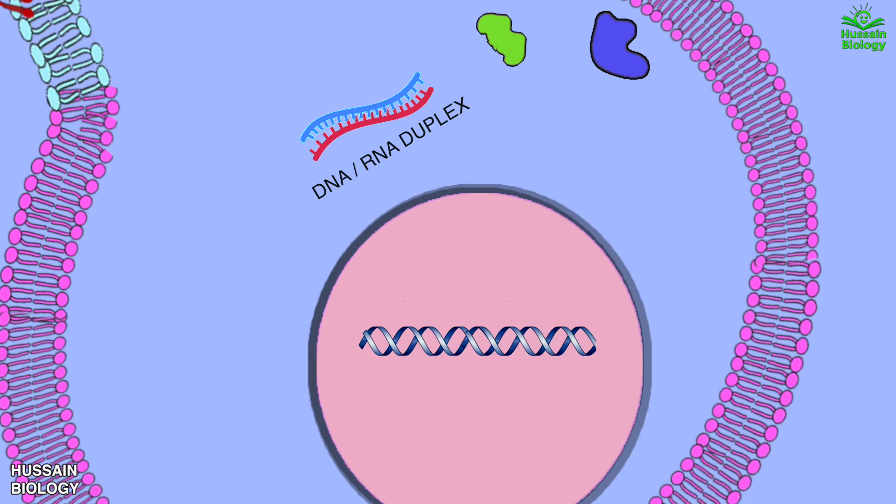Furthermore, this reverse transcriptase enzyme from the virus also has ribonuclease H activity. It acts on the cDNA and degrades the positive RNA strand out of it, leaving a single strand of DNA. Then the same reverse transcriptase enzyme acts on the single DNA strand and makes double-stranded DNA out of it, which is now a complete double-stranded viral DNA.